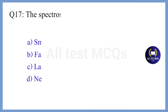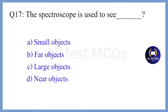Question 17. The spectroscope is used to see — the correct answer is Option B. Far objects.